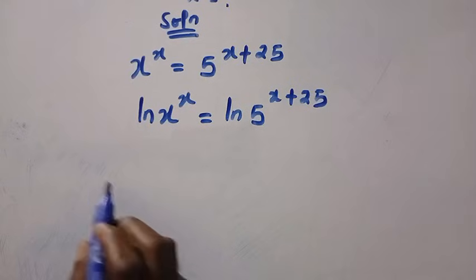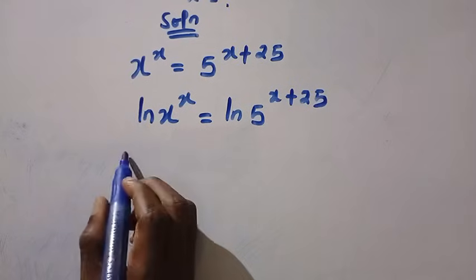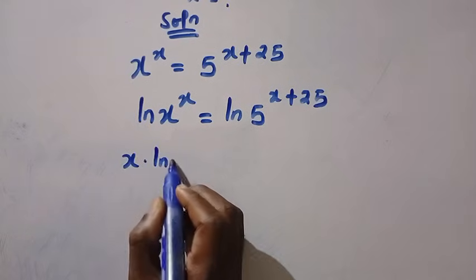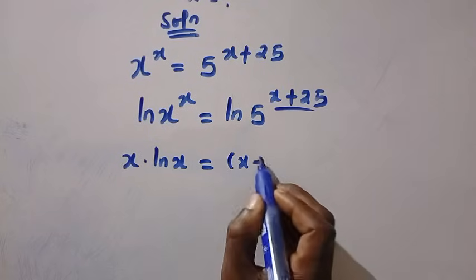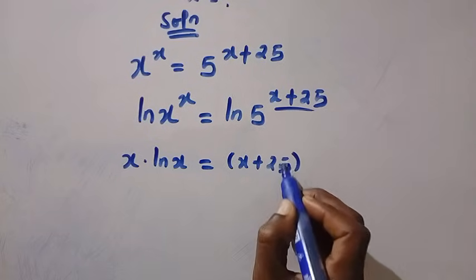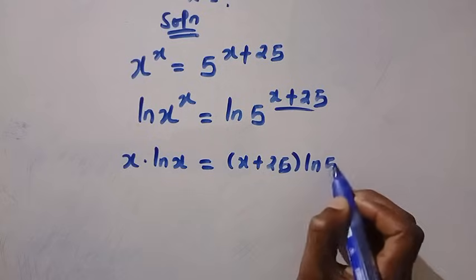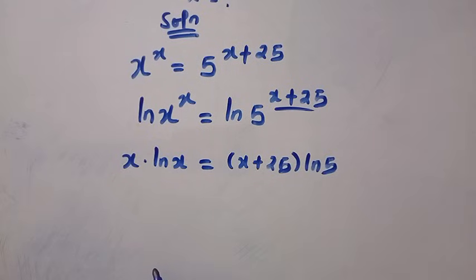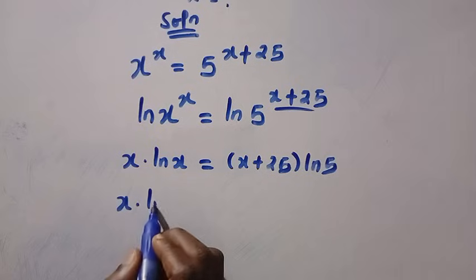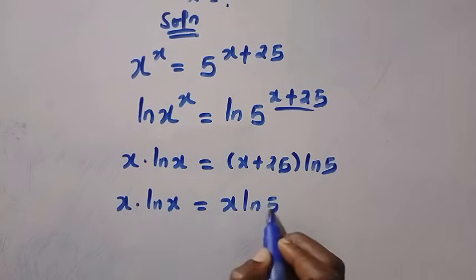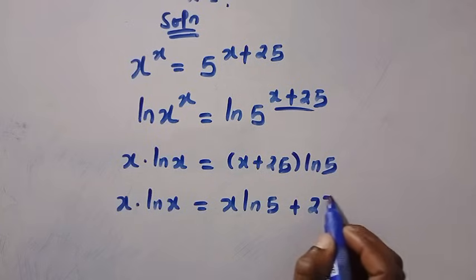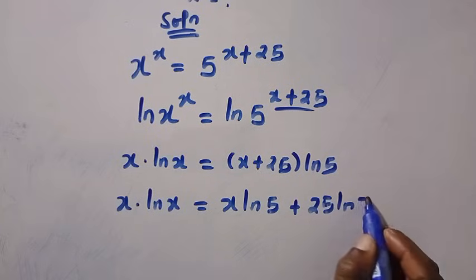So the second step is we apply the rule of logarithm. x comes here and we have x multiplied by ln x equals the whole of this which is x plus 25 comes down then multiplied by ln 5. So next we are going to open this bracket and we have x multiplied by ln x equals x ln 5 plus 25 ln 5.